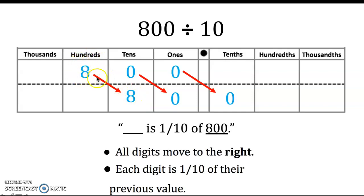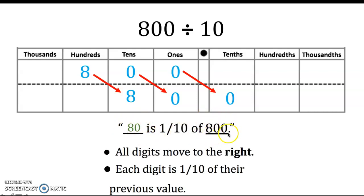Our 8 in the hundreds place is 10 times greater than our 8 in the tens place. But looking at it in reverse, our 8 in the tens place is one-tenth of the 8 in the hundreds place. The 0 in the ones place is one-tenth of the value of the 0 in the tens place. We describe our quotient with our dividend the same way we do with 10 times as much as. Our quotient is 80 — 80 is one-tenth of the value of 800, which is our dividend.